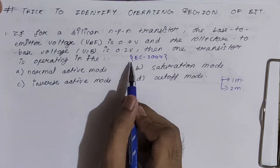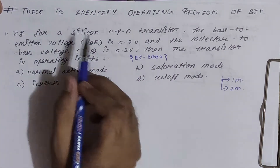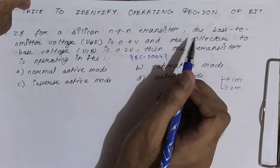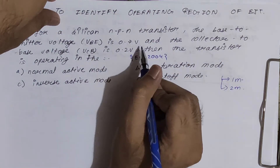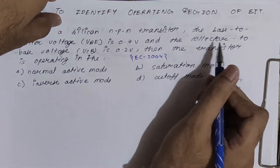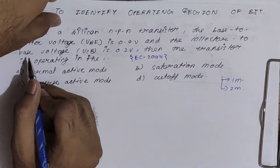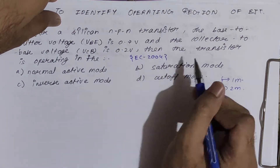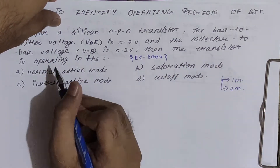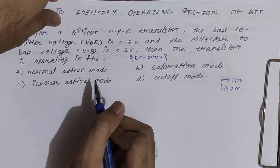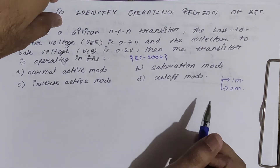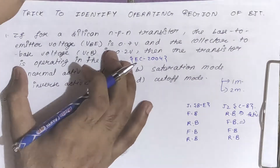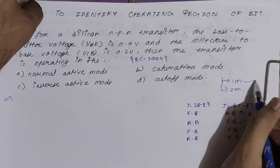The first sum is from EC 2004: for a silicon NPN transistor, the base-to-emitter voltage VBE is 0.7V and the collector-to-base voltage VCB is 0.2V. The transistor is operating in normal active mode, saturation mode, inverse active mode, or cutoff mode?